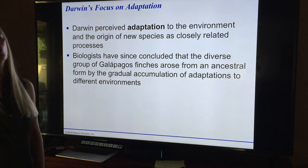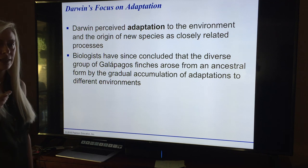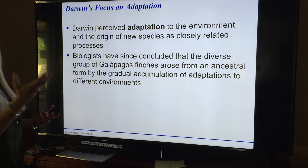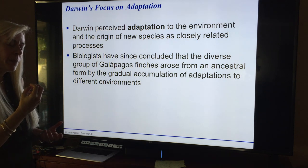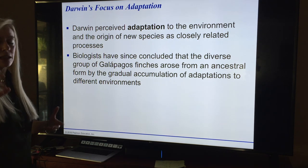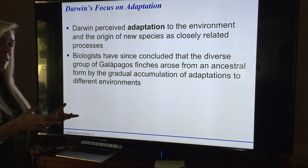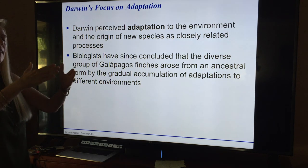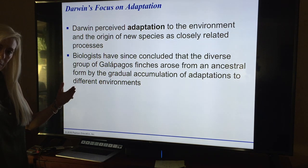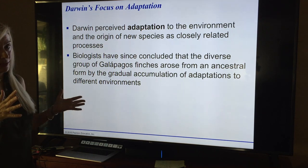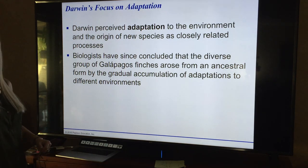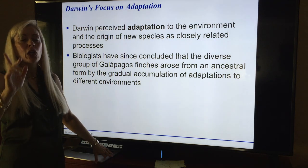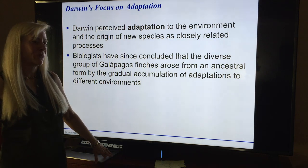If finches got blown in from Ecuador onto the Galapagos, maybe the first island had flowers, so they needed a beak for nectar. A couple got blown to the next island that had seeds — getting into seeds requires a different beak. That's how adaptive radiation happened. We see this in Darwin's finches, and also in different types of fruit flies and honeycreepers in the Hawaiian Islands — endemic species found nowhere else.